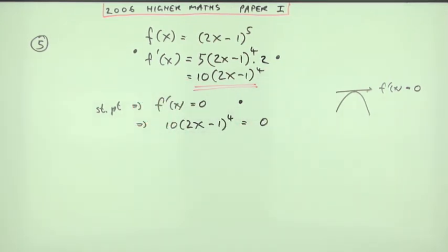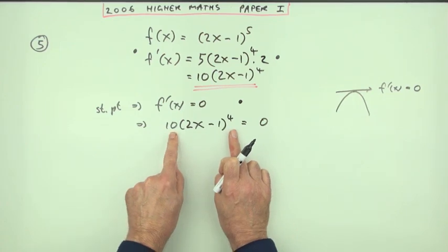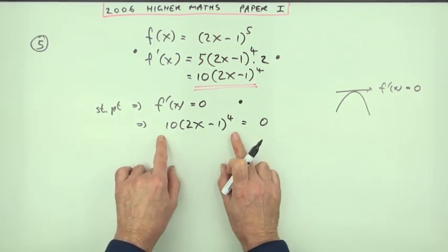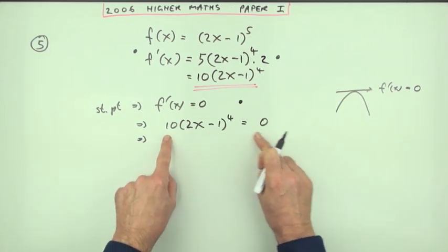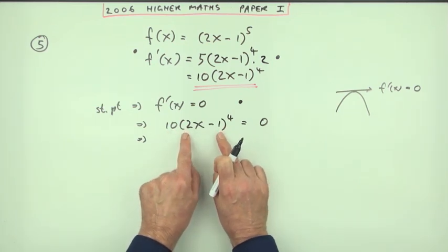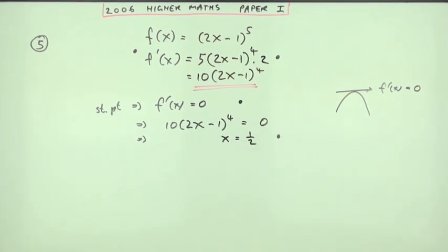That means 10(2x − 1)^4 = 0. The expression is fully factorised — 10 can't equal zero, so it must be the bracket that equals zero. Therefore 2x − 1 = 0, which gives x = 1/2. That's mark number four.